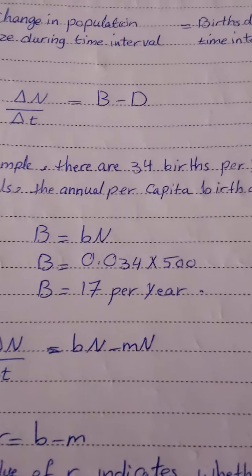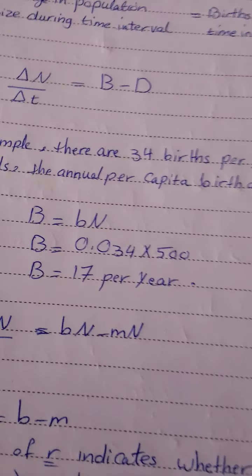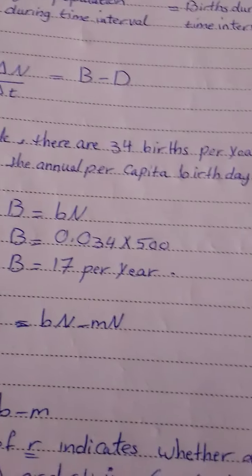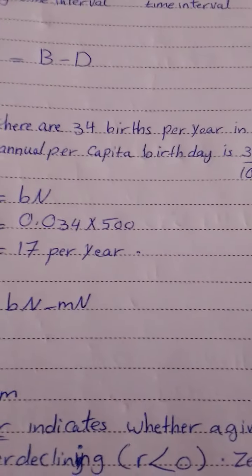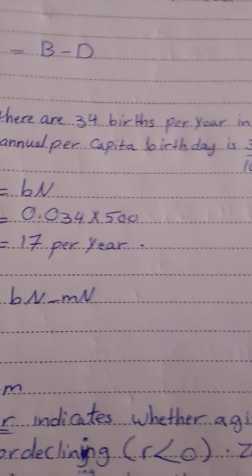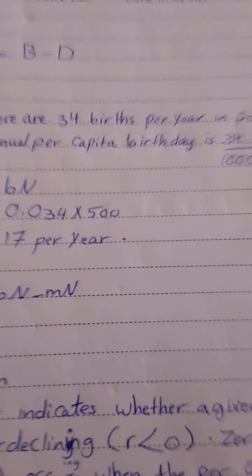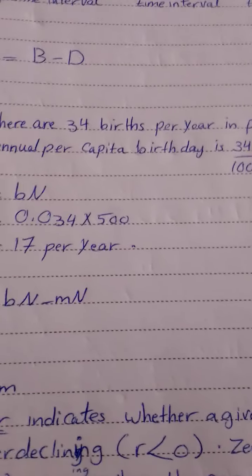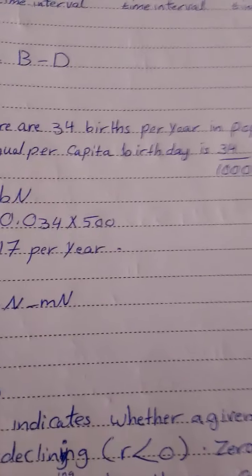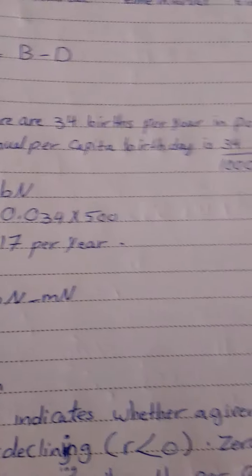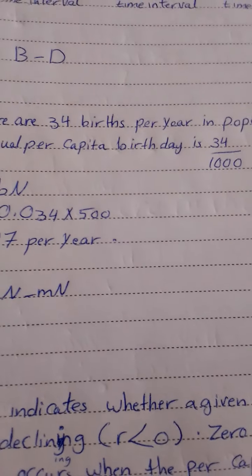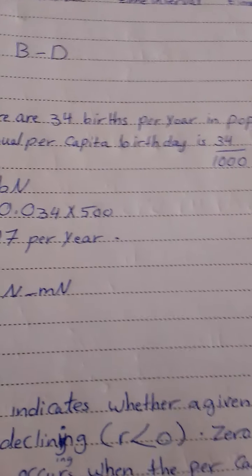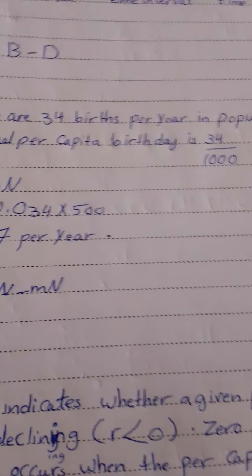Welcome to Biology: Descent Study of Life. The exponential model describes population growth in an idealized, unlimited environment. The concepts of life history provide a biological foundation for a quantitative understanding of population growth.